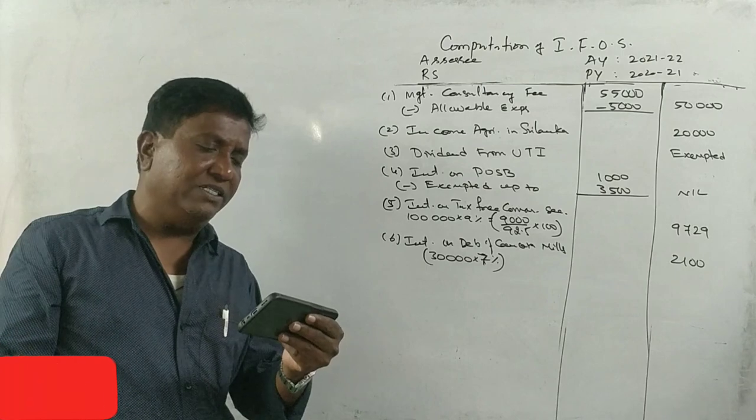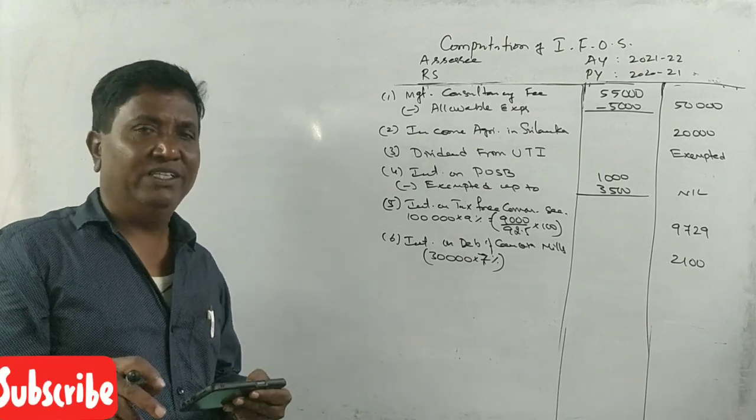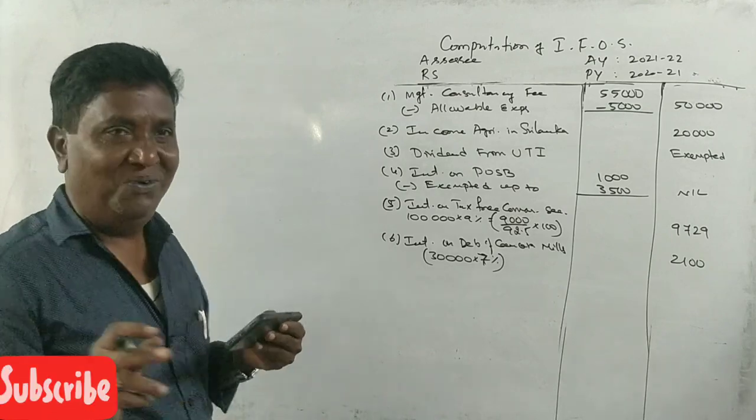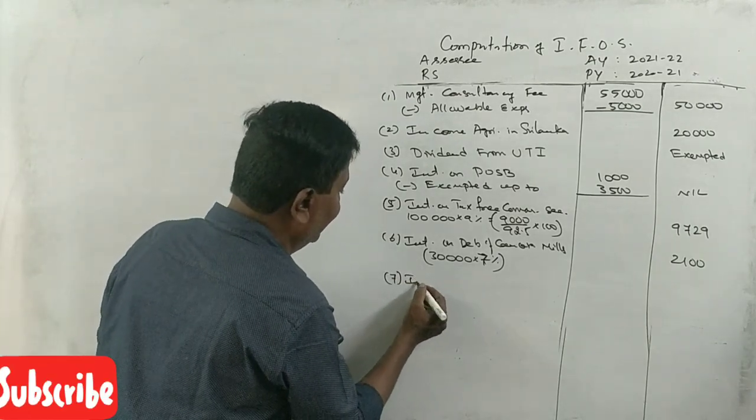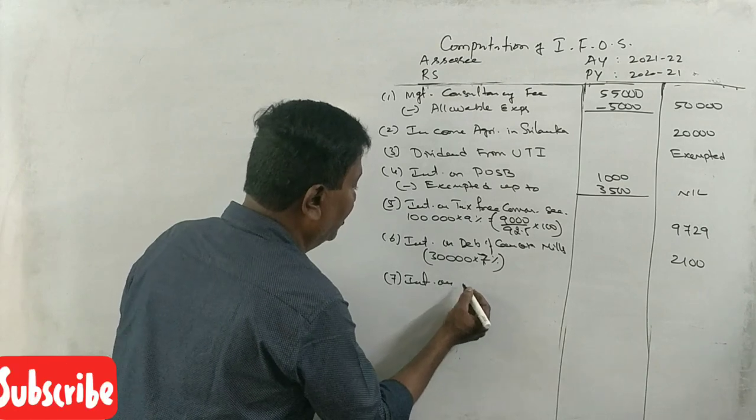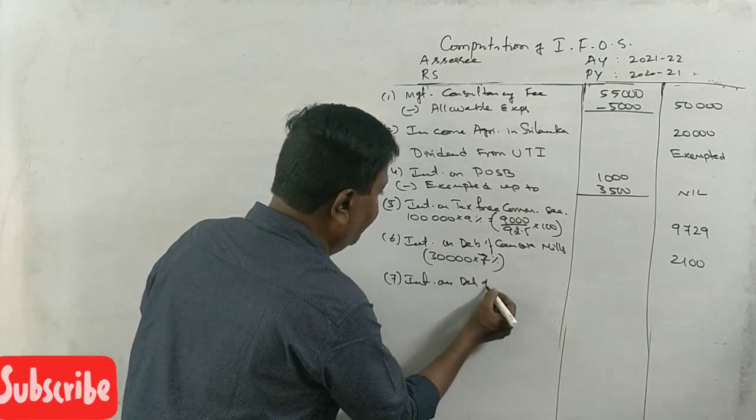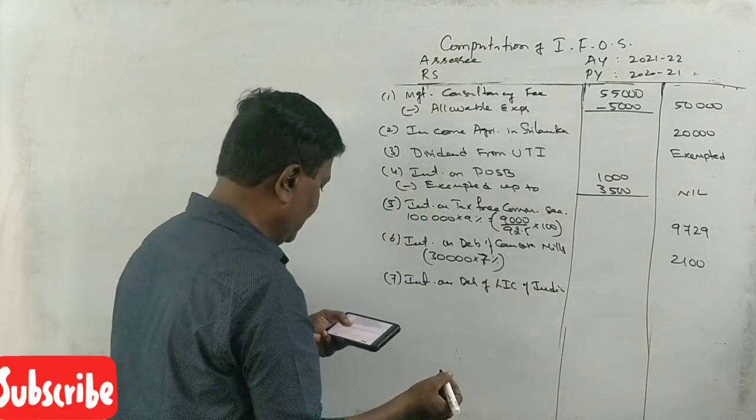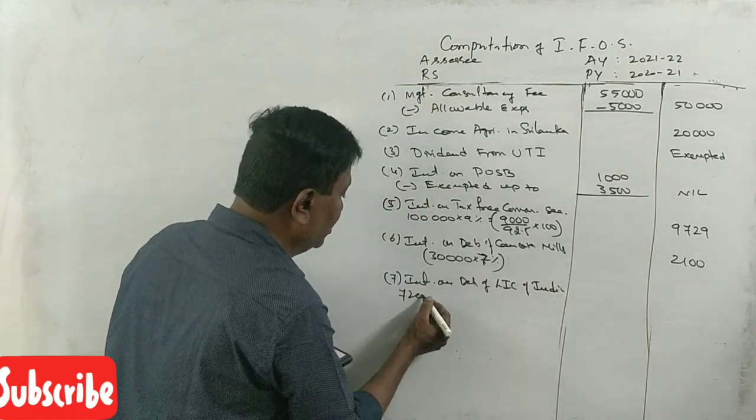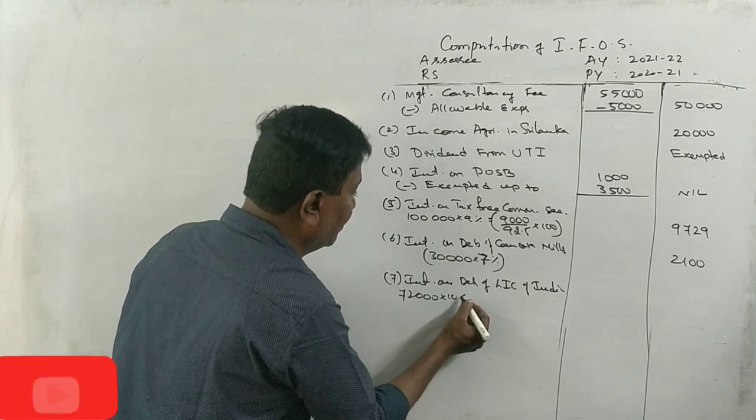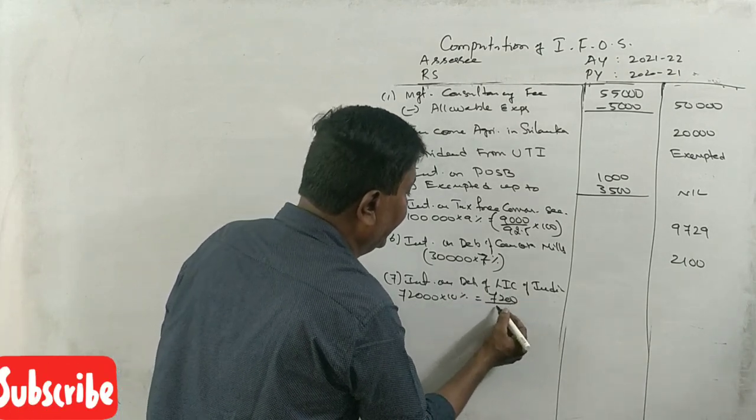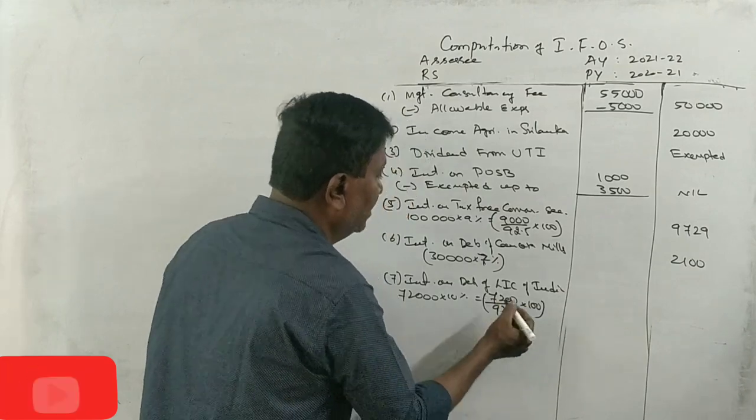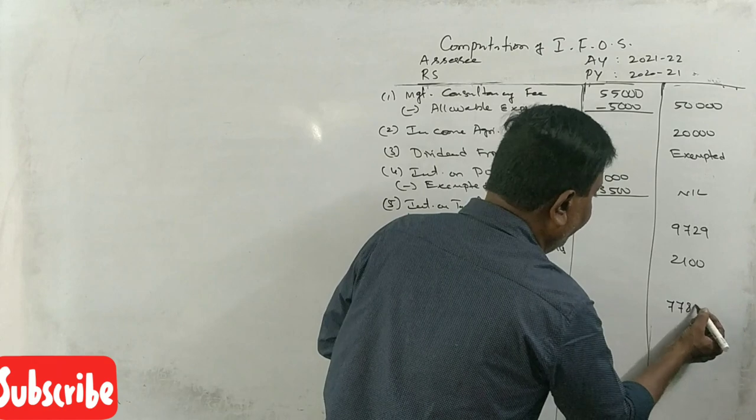72,000, 10% tax-free debentures of LIC of India. Interest on debentures of LIC of India. 72,000 into 10%, 7,200 divided by 92.5%, 10,200, 7,084.